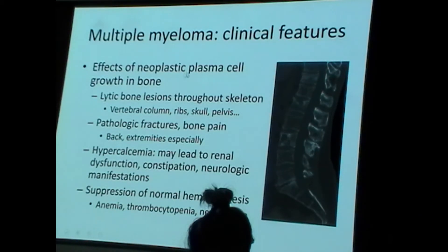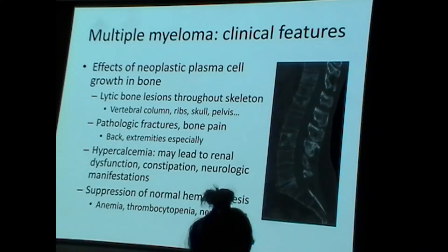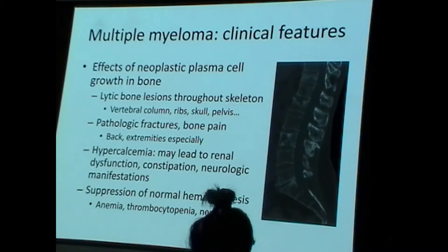Clinical features related to cancer in bone include radiolucent lesions throughout the skeleton and an increased risk of pathologic fractures. A pathologic fracture — such as spinal cord compression — is a fracture that occurs not because of trauma, but because so much of the bone has been eaten away by pathology that it fractures on its own. Pathologic fractures can also occur in osteoporosis.